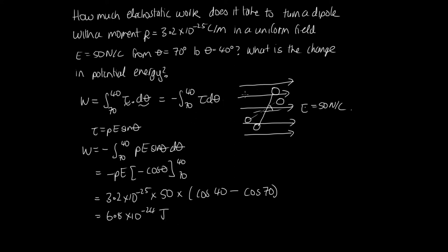The change in potential energy is the negative of the electrostatic work done, so ΔU = −6.8 × 10⁻²⁴ joules. We should check this makes sense: as the dipole becomes more aligned with the field, we'd expect it to lose potential energy, so a negative answer is exactly what we expect.